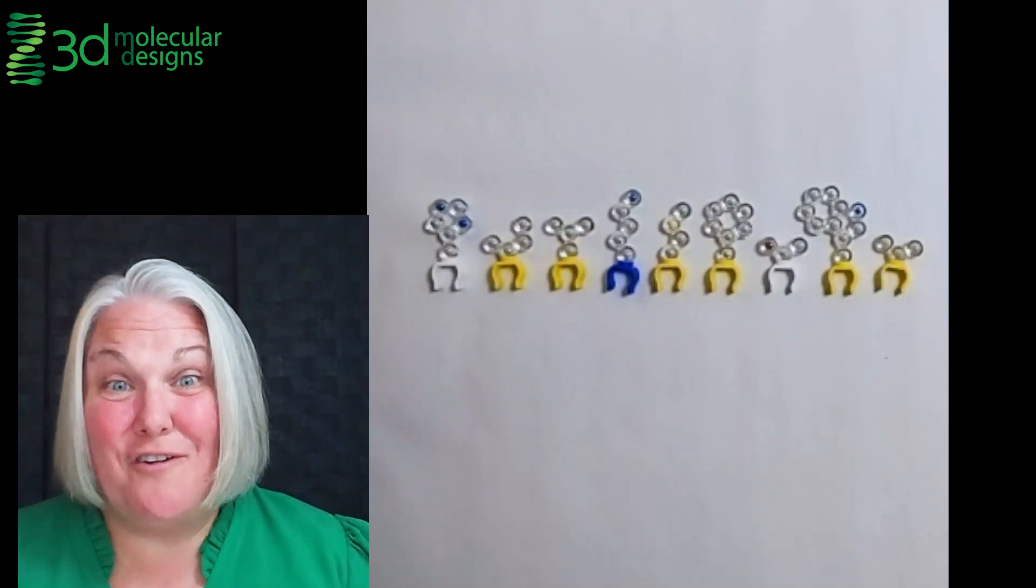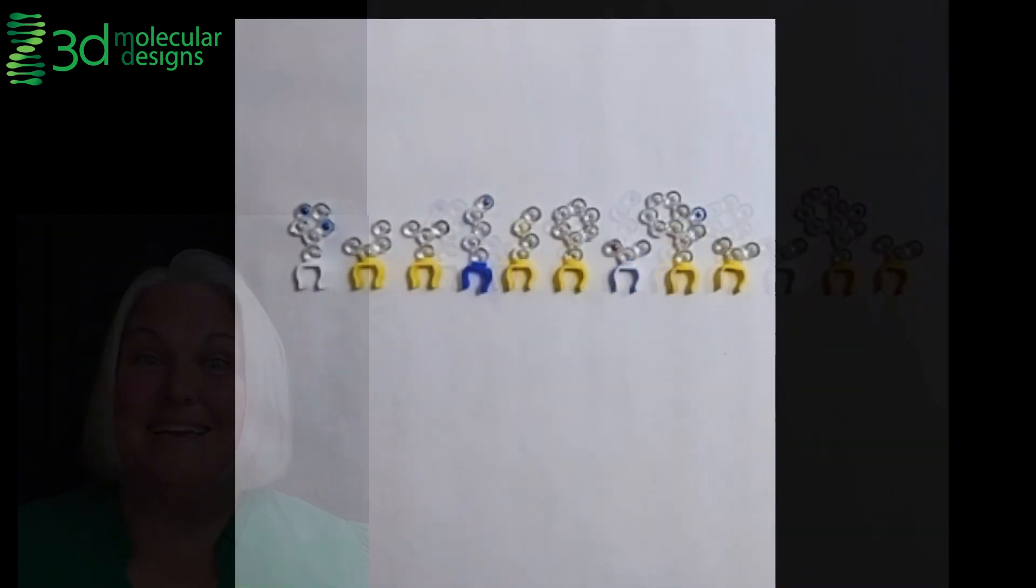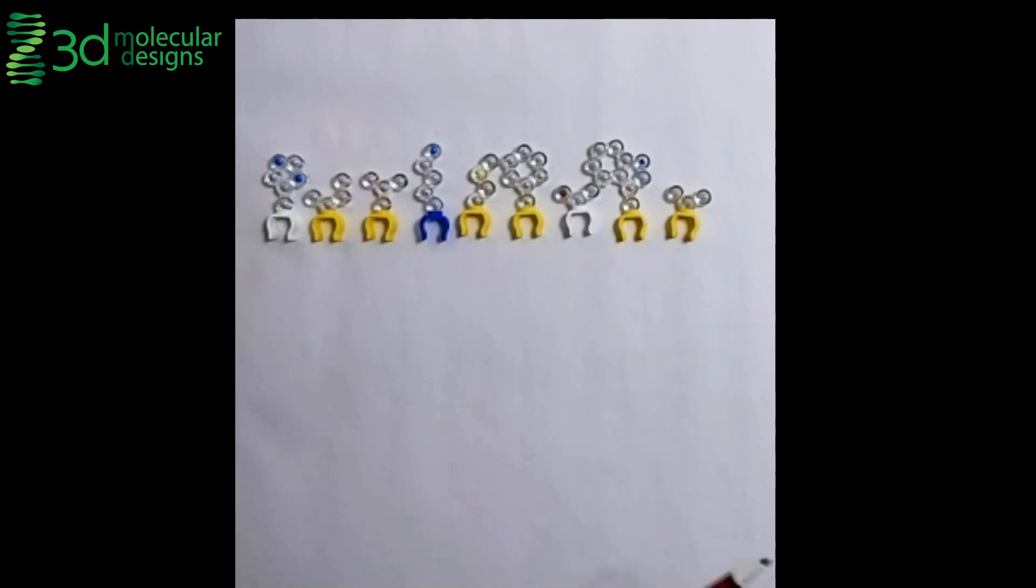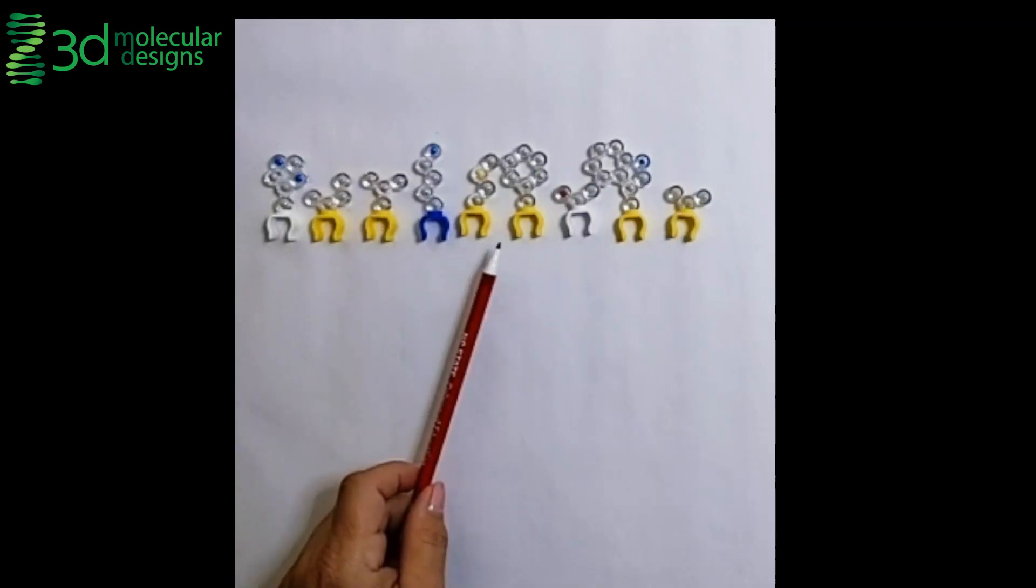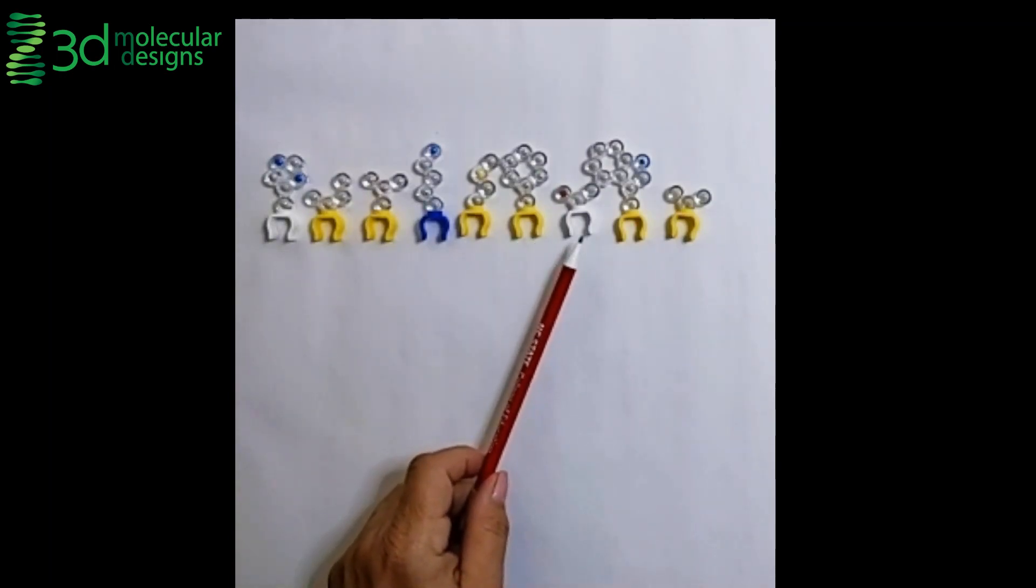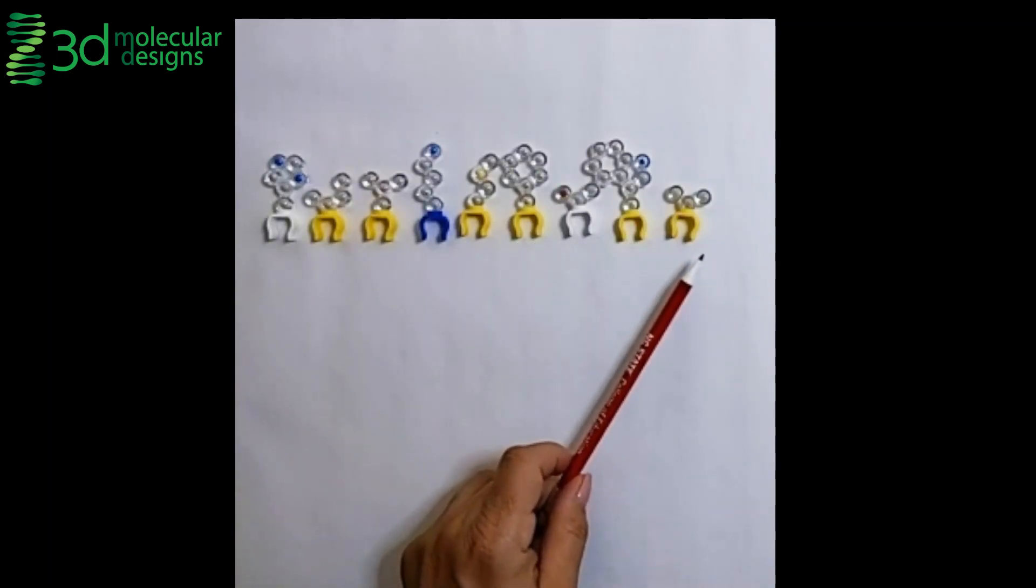What they find is that of the nine essential amino acids that our bodies cannot make, we must get through our diet. They find we don't make histidine, isoleucine, leucine, lysine, methionine, phenylalanine, threonine, tryptophan, and valine.